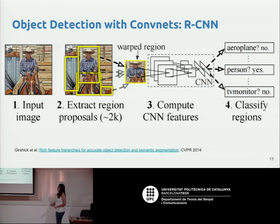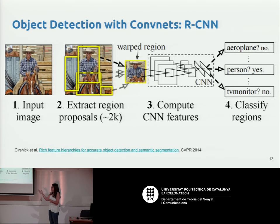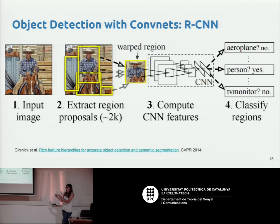The first approach to apply CNNs for object detection is Region CNN (R-CNN). The pipeline takes an input image, extracts around 2,000 object proposals, and then for each proposal extracts CNN features — this was the first time CNN features were used for object detection. Once all proposals are described, a support vector machine is trained to classify the different proposals.